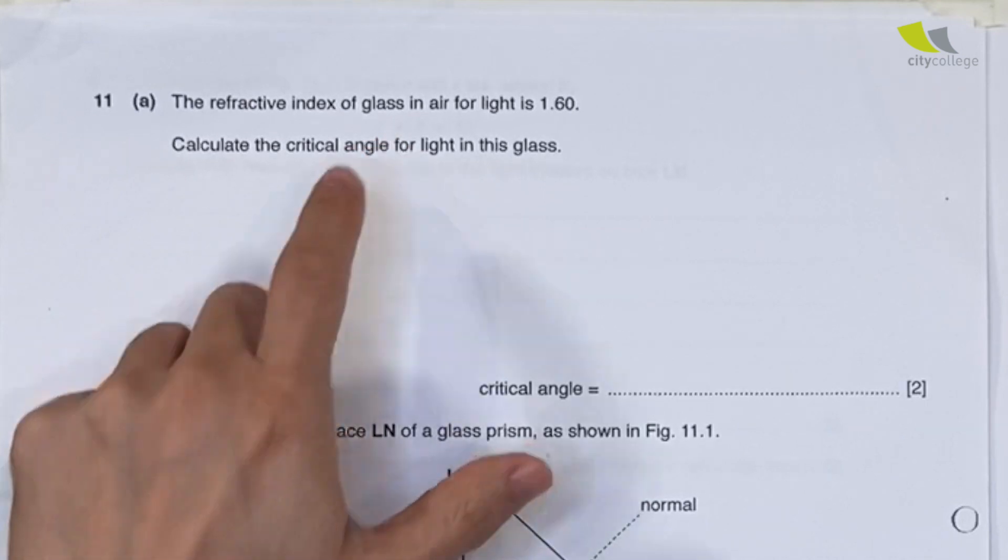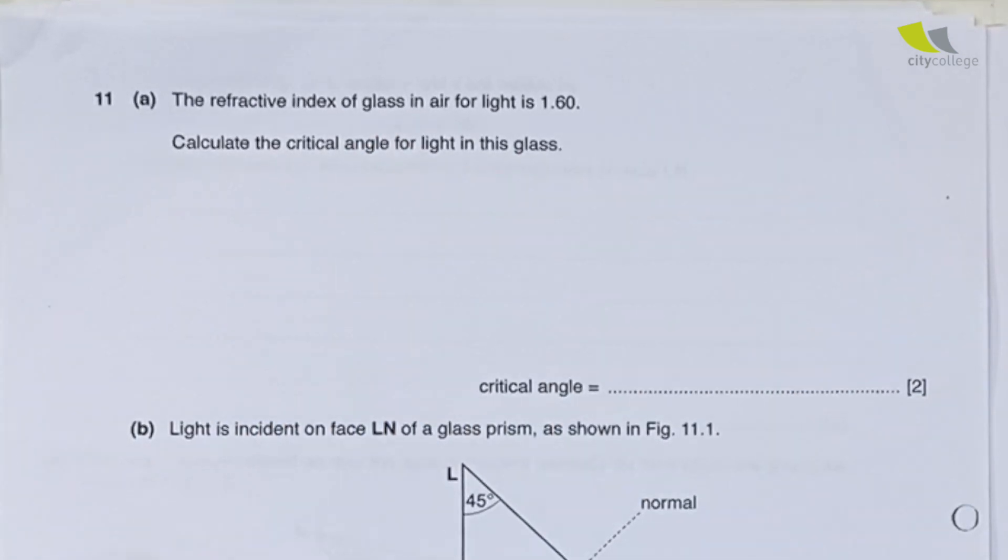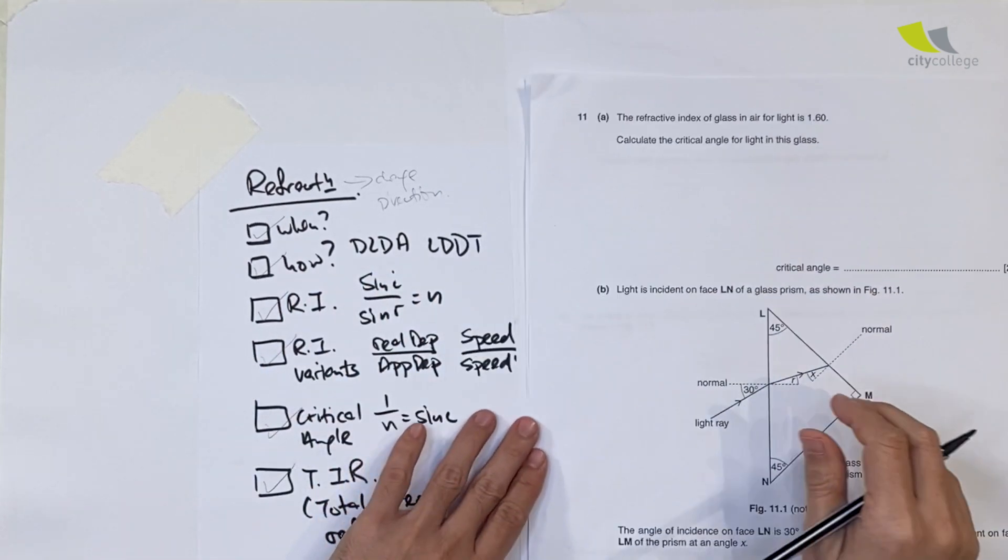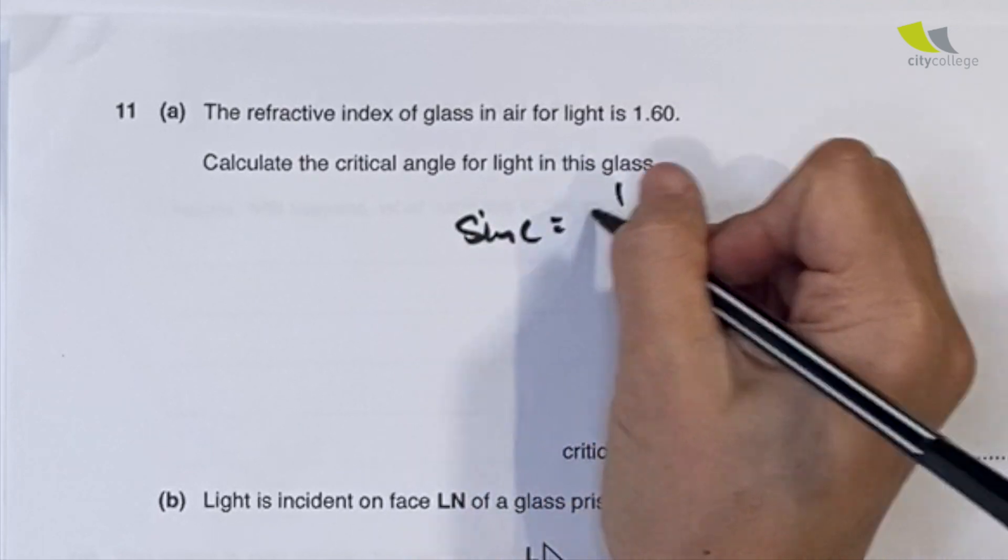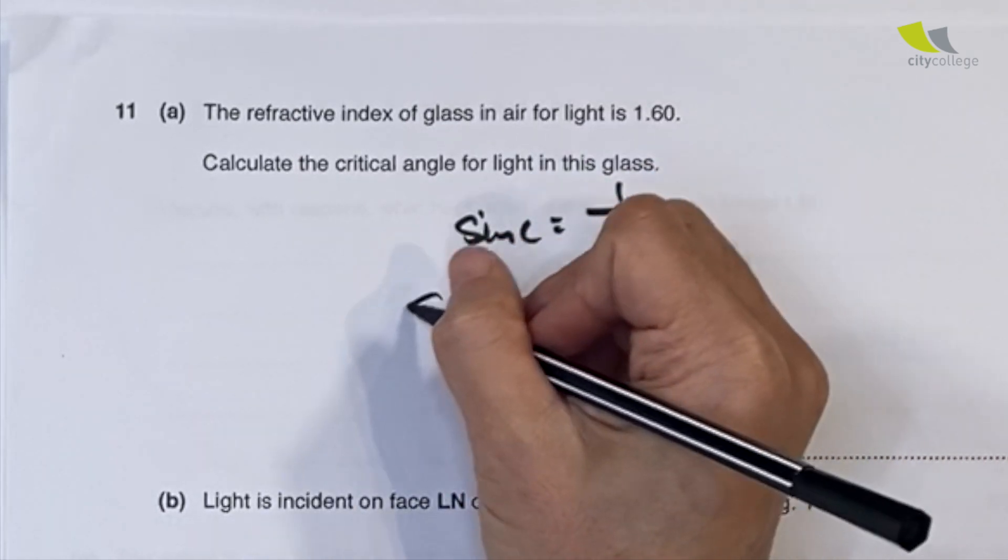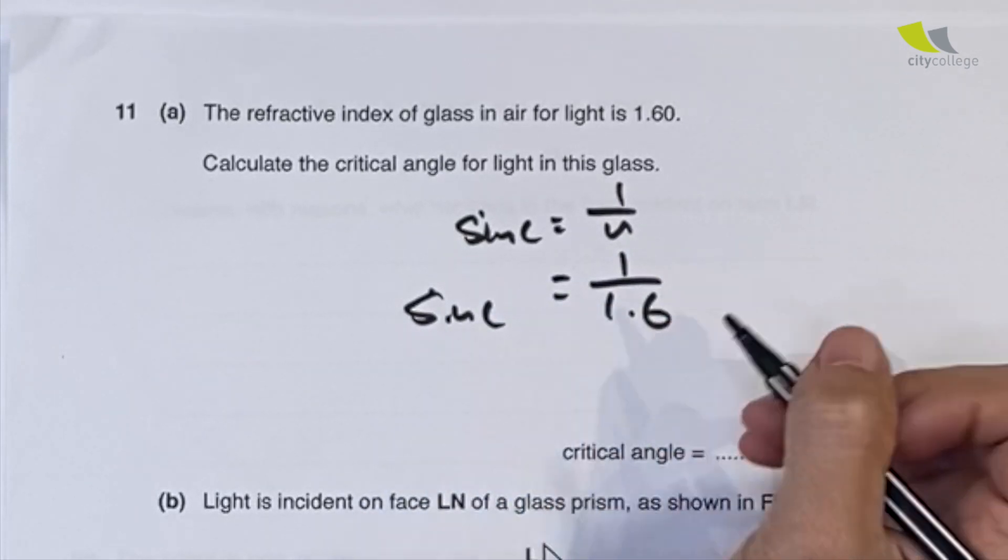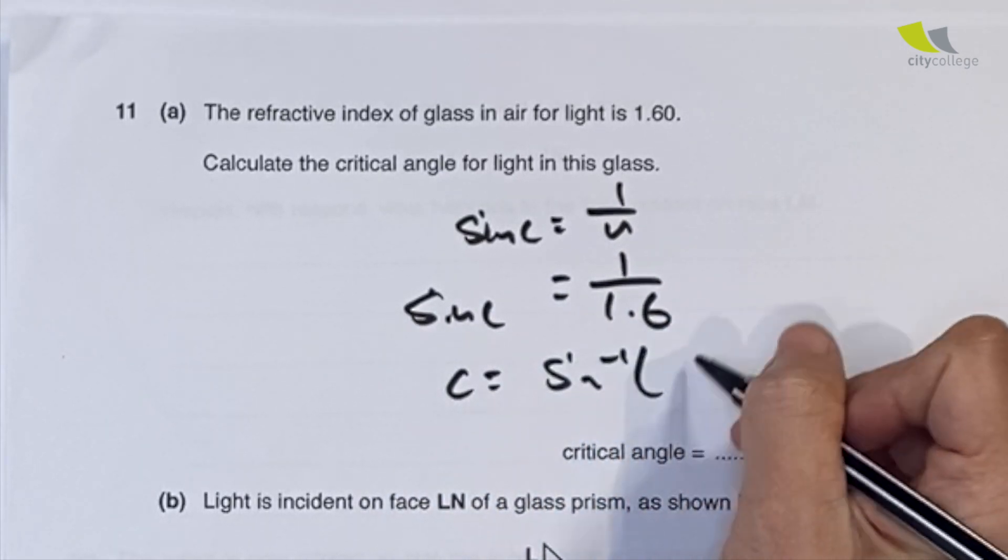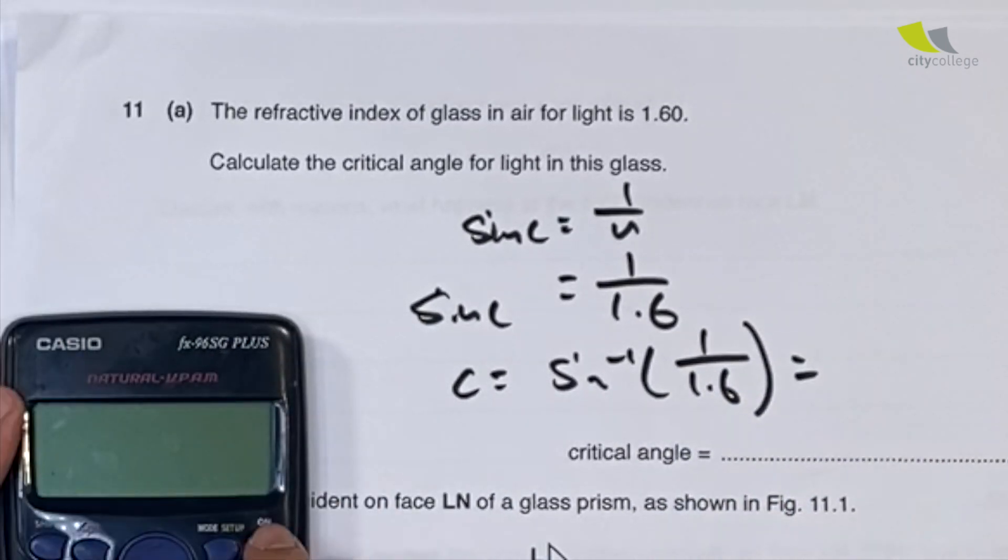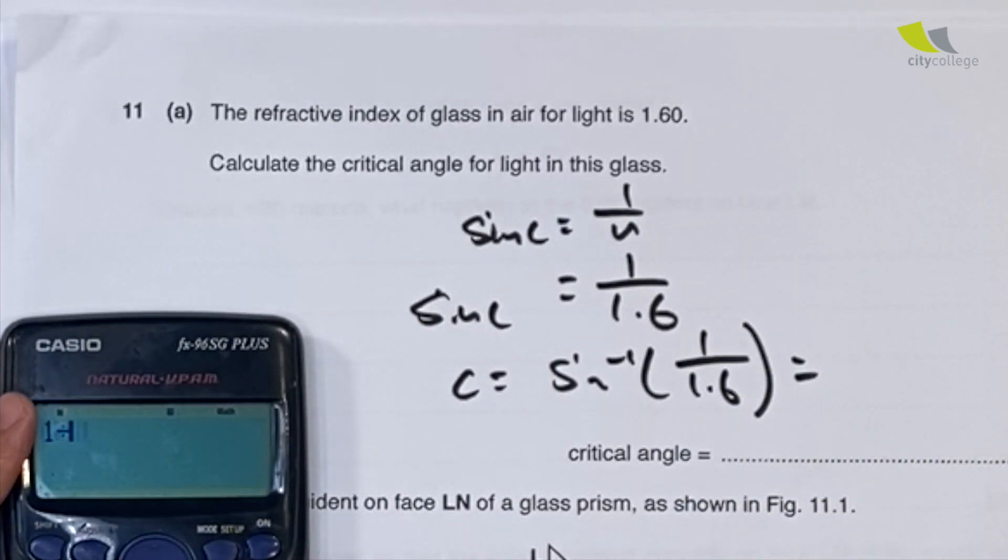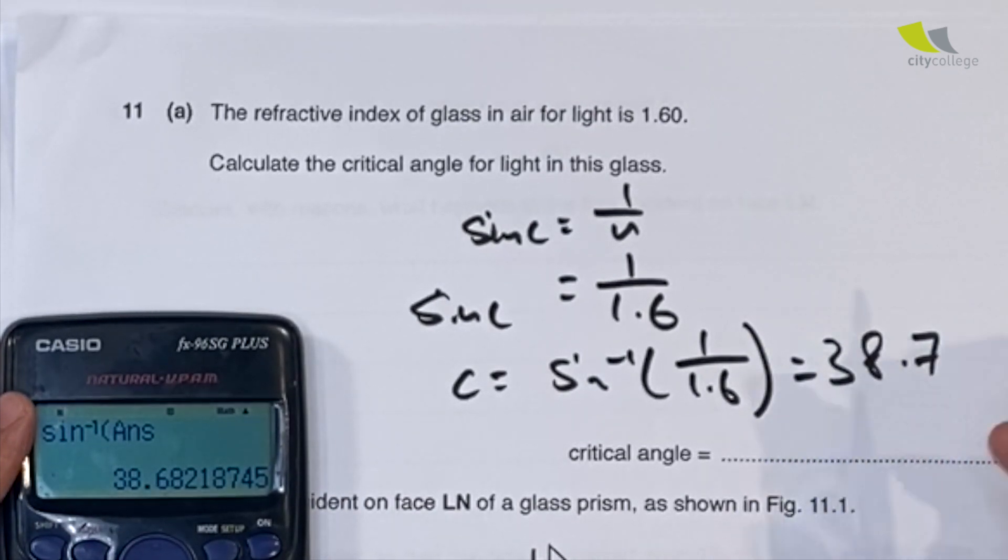The refractive index of glass in air is 1.6. Calculate the critical angle for light in this glass. The formula you're using is 1 over n equals sine c, or sine c equals 1 over n. So sine c is 1 over 1.6. c will be sine inverse, which you calculate to be 38.7 degrees.